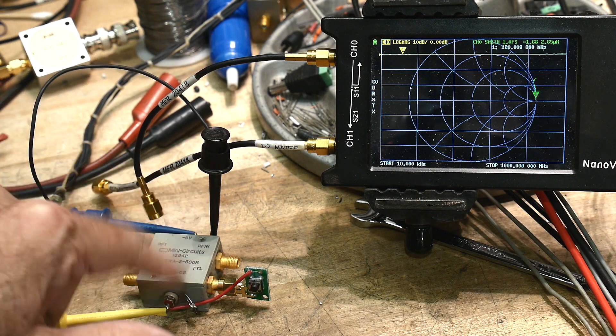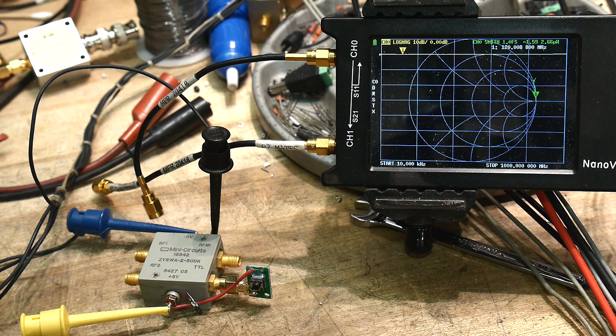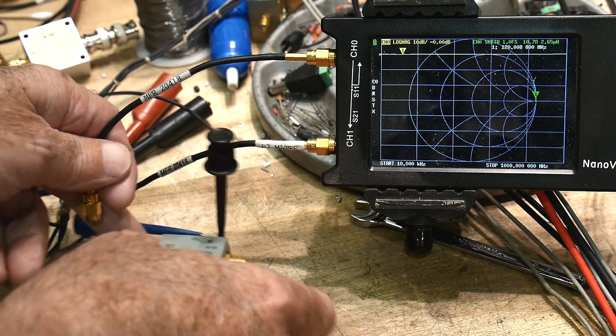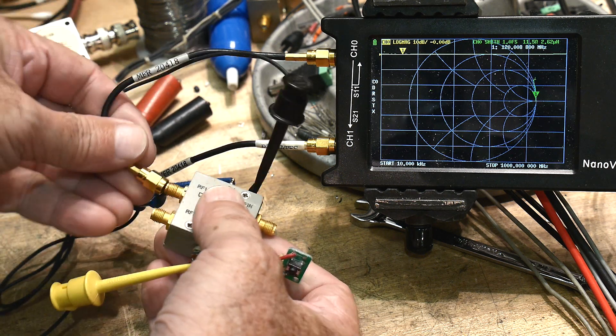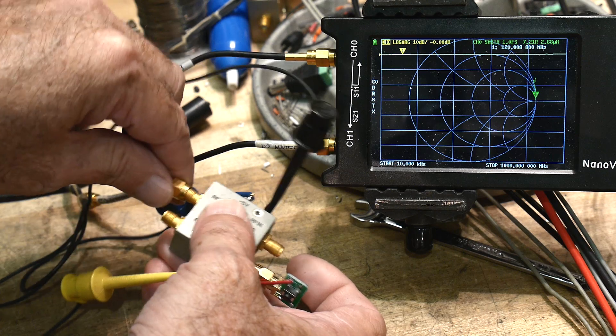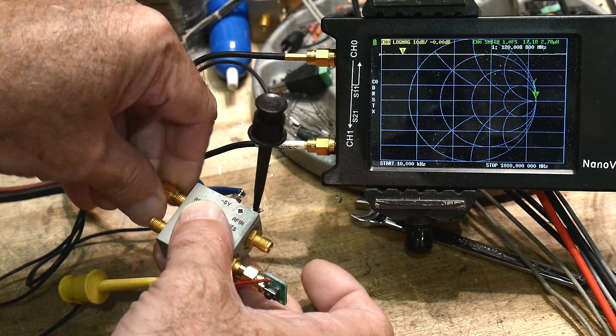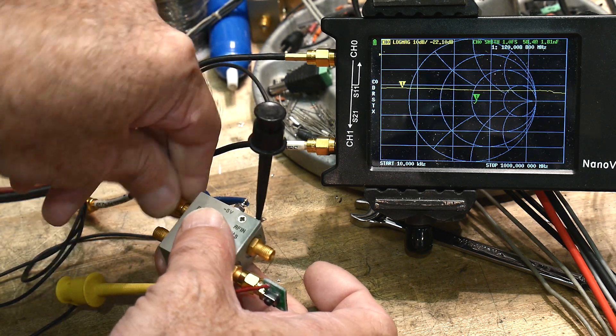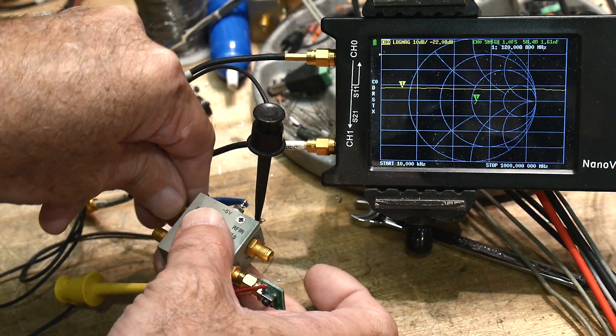All right, so I have plus or minus 5 volts hooked up. And let's take a look at the RF1. This is the one that has the 50 ohm load in it, so we'll see if that 50 ohm load is really 50 ohms. We can do that with a vector network analyzer. And yeah, there we go. Look at that. Very nice.